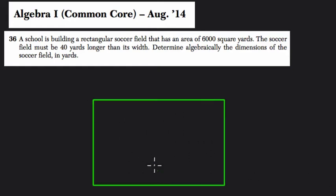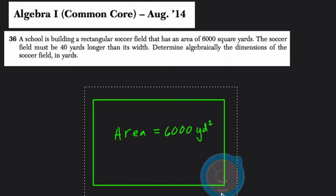Okay, and it has an area of 6,000 square yards. So I'm going to label that yards squared. The soccer field must be 40 yards longer than its width. Okay, so the orientation of my soccer field is a little bit off. Let's fix that. It should be longer than it is wider.